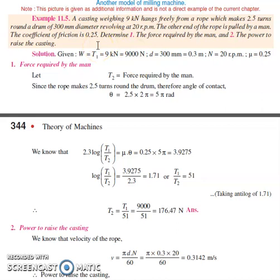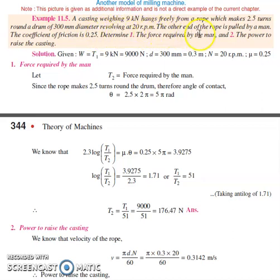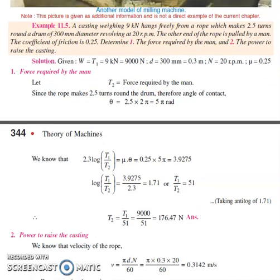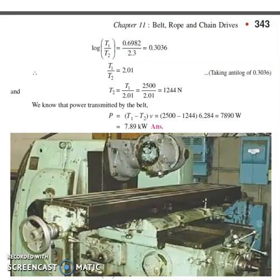The next problem: a casting weighing 9 kN hangs freely from a rope which makes 2.5 turns around a drum of 300 mm diameter revolving at 20 rpm. The other end of the rope is pulled by a man. The coefficient of friction μ = 0.25. We need to determine the force required by the man and the power to raise the casting.